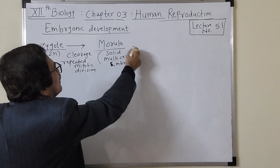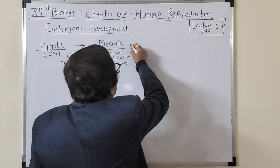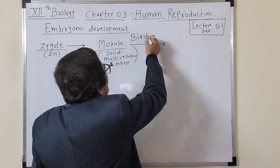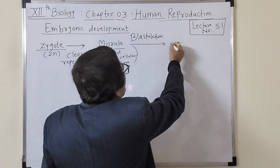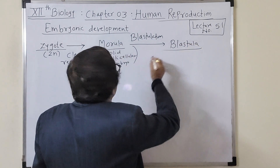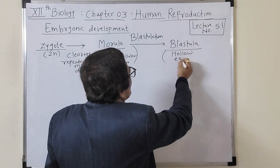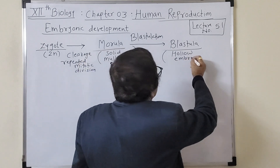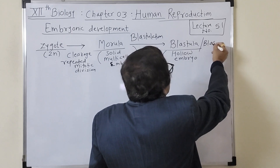The morula then undergoes a process called blastulation. Blastulation produces another embryo called the blastula — this is a hollow embryo having a cavity called the blastocoele. In human beings this is also referred to as the blastocyst.